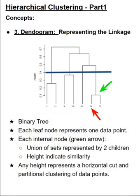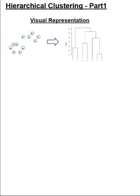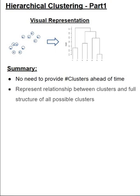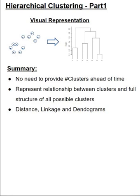Now that we have seen what dendrogram is, let's quickly summarize what we have covered so far. Hierarchical clustering will help turn our data into a hierarchy of clusters based on their distances. The key features are: we do not need to provide the number of clusters ahead of time. It represents the complete structure of all possible clusters for our data and is useful for representing the relationship between clusters. Distance, linkage, and dendrograms are three key concepts that drive the algorithms. And we have seen illustration of agglomerative and divisive algorithms within this space.